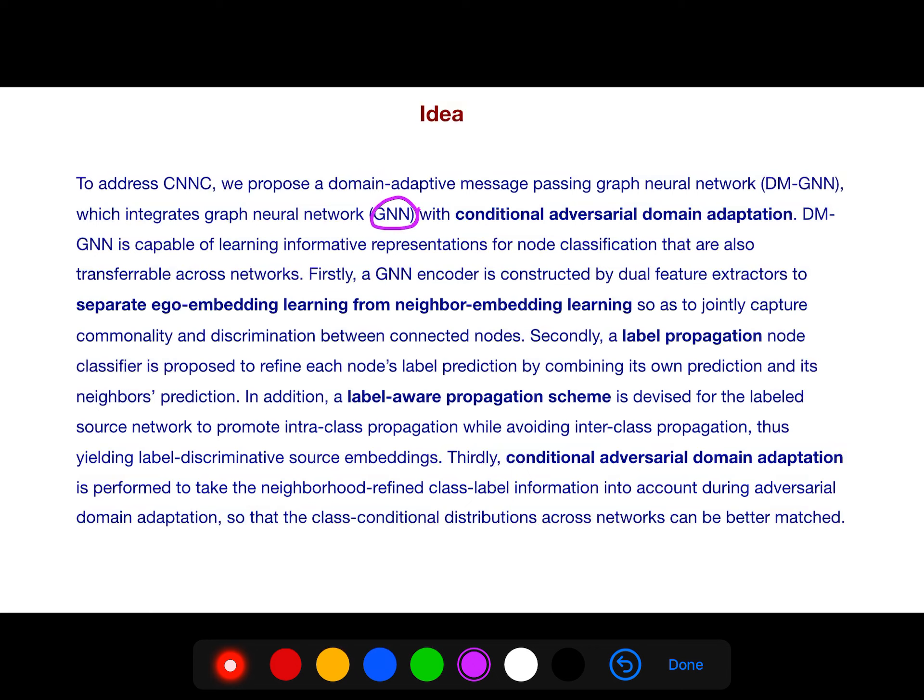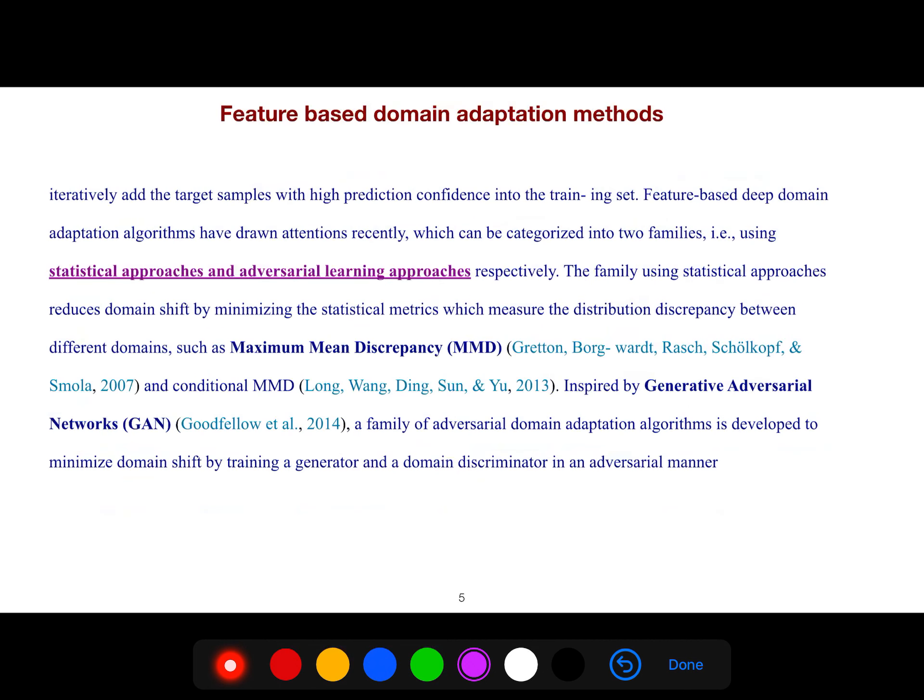Third, conditional adversarial domain adaptation is performed to take the neighborhood refined class label information into account during adversarial domain adaptation, so that the class conditional distributions across networks can be better matched. Iteratively, we add the target sample with high prediction confidence into the training set.